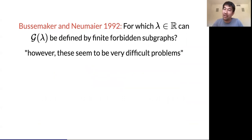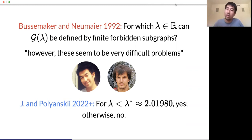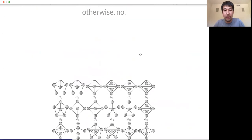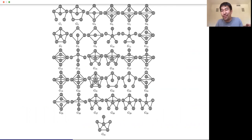This year, with Sasha, we managed to show that the answer to this question is yes if and only if λ is less than λ*, the constant I asked you to memorize at the beginning — approximately 2.0198. There's a very clean threshold phenomenon: below the threshold, the answer is yes, you can characterize using finitely many forbidden subgraphs; otherwise the answer is no. Our proof examines 31 graphs, just to give you a sense that it's quite involved.